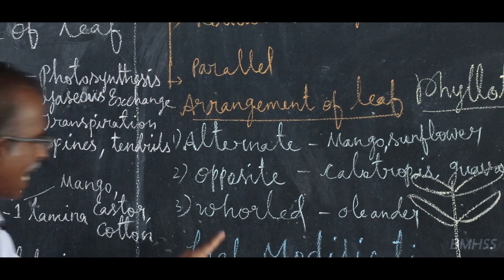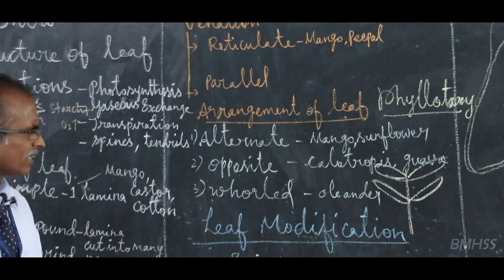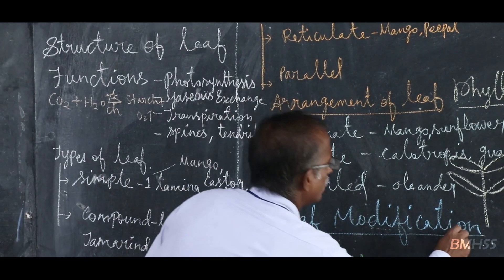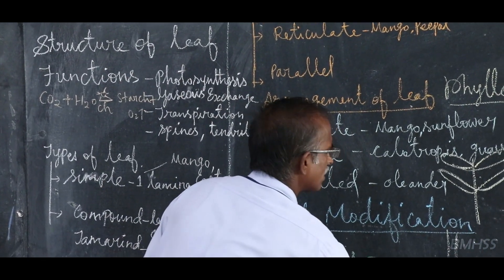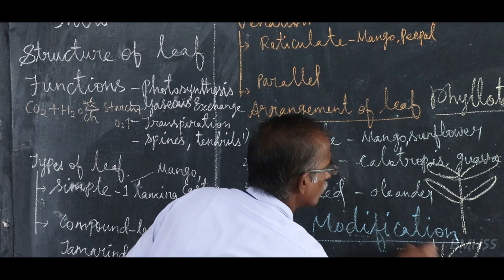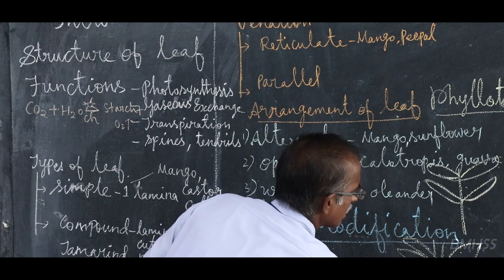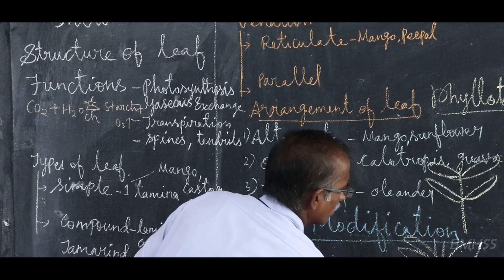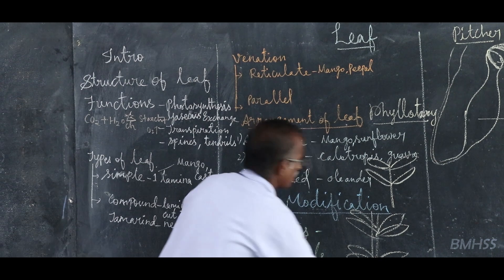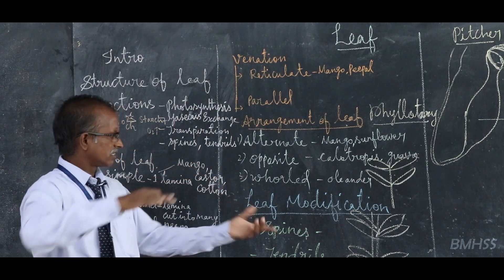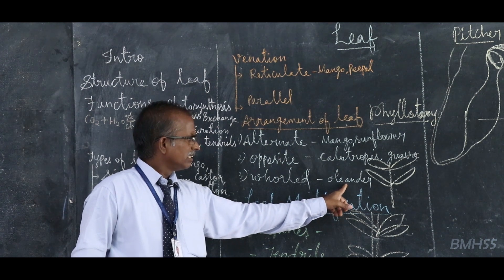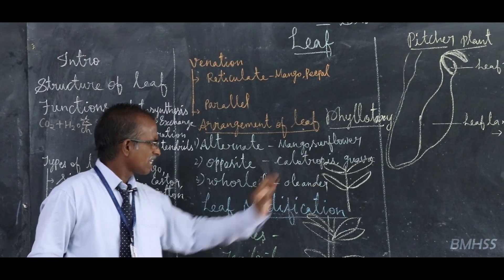The third type is whorled — where more than two leaves are arranged in a circle or whorl at each node. An example is Oleander.